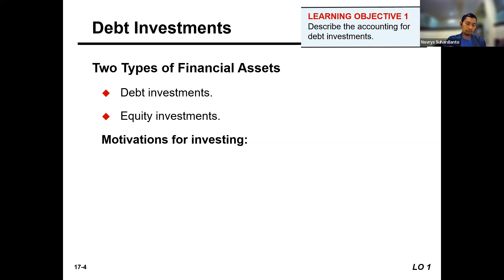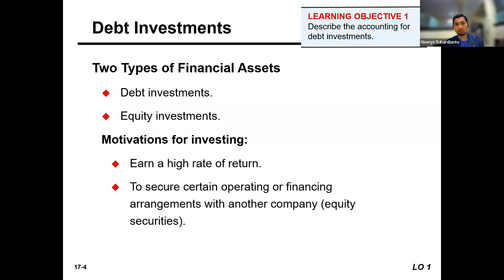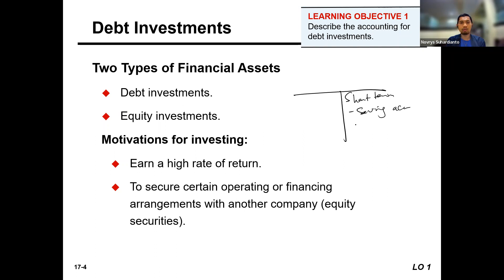So why does a company invest? Of course they want to earn a high return. They also want to secure some of the operation or financing arrangement. For example, in the financial industries like banks, they have short-term liabilities, because in a bank they have saving accounts or deposit accounts, and all these accounts are liabilities.